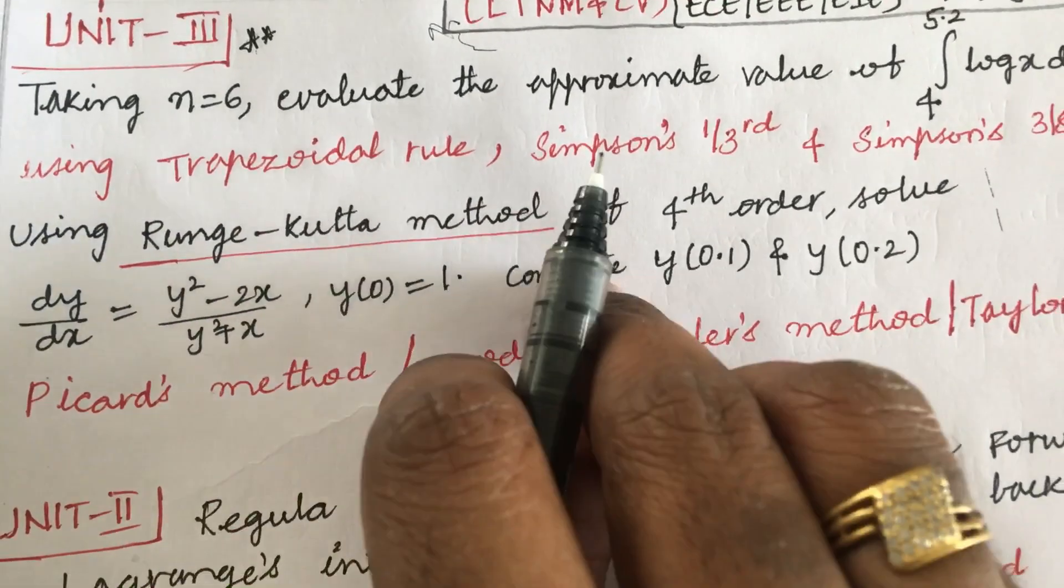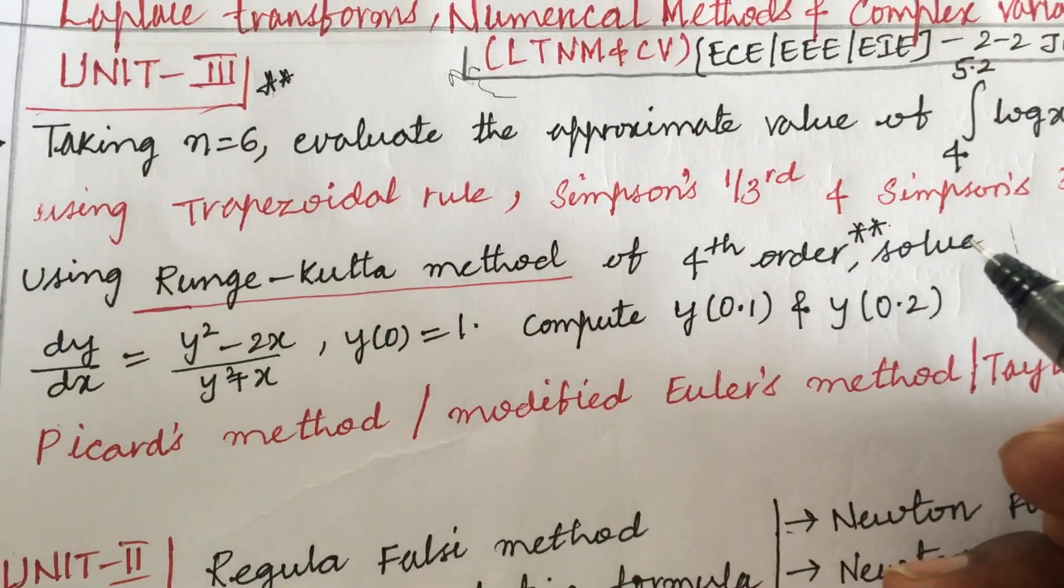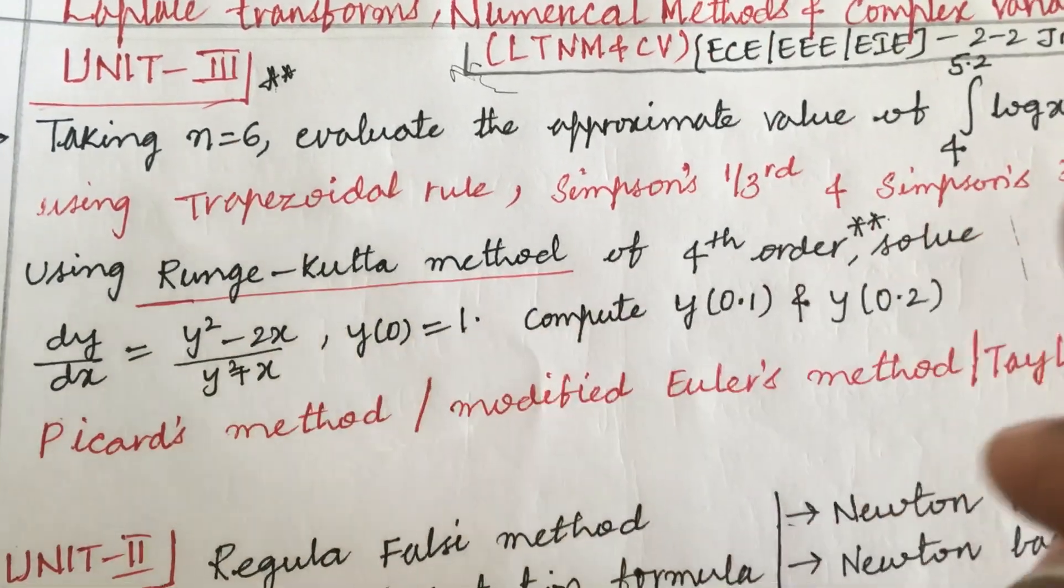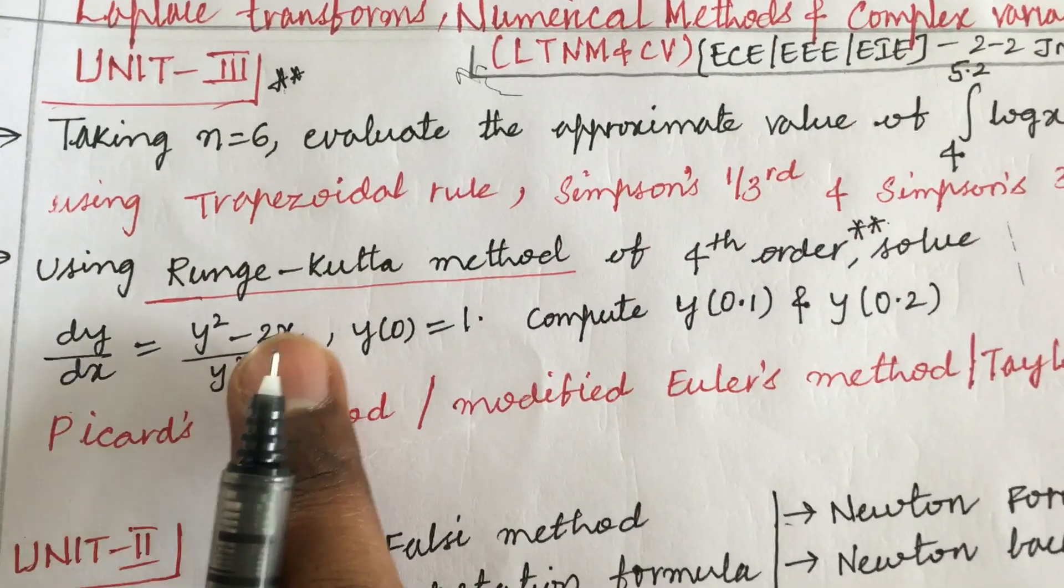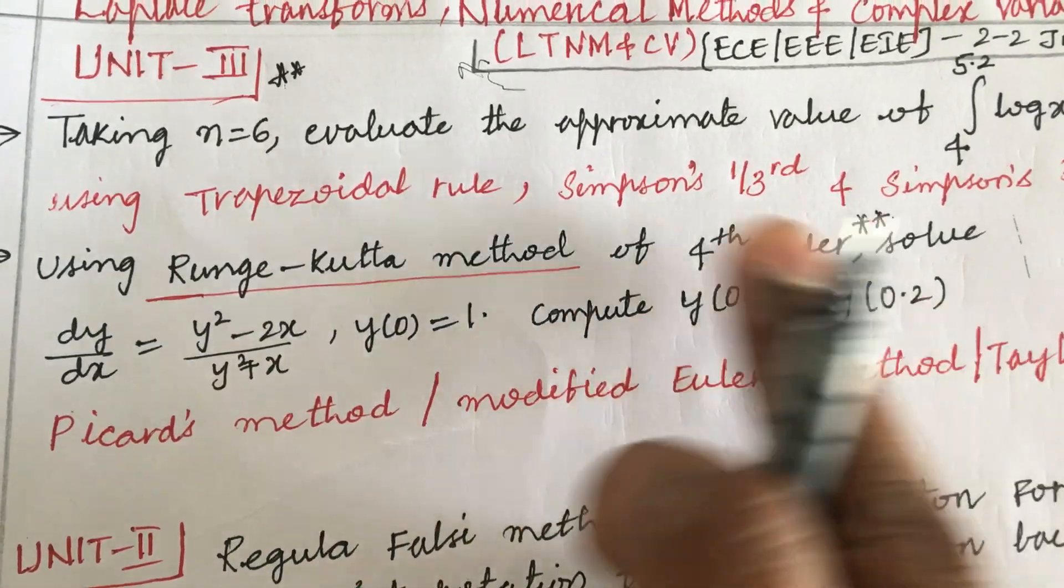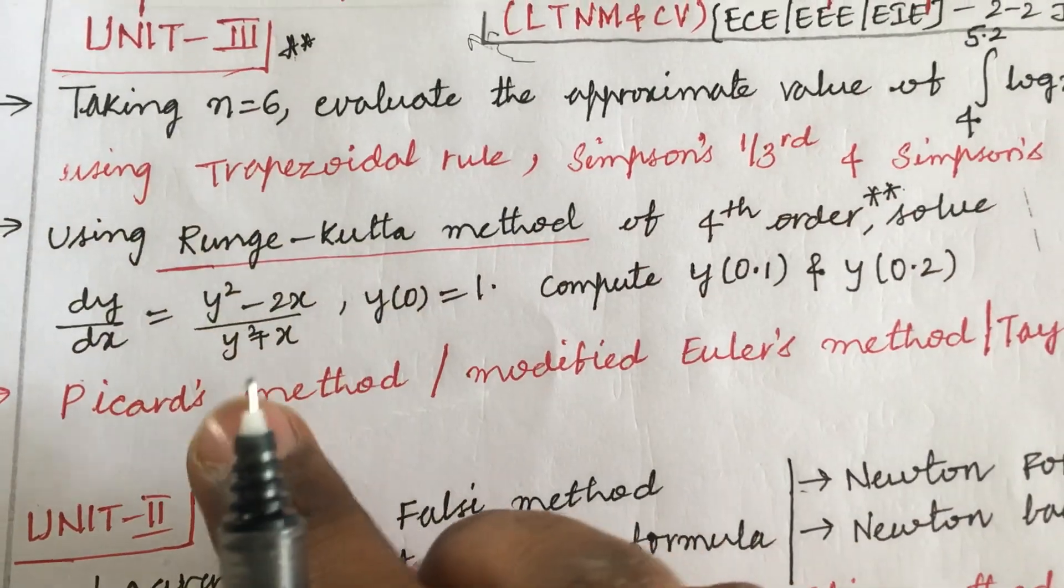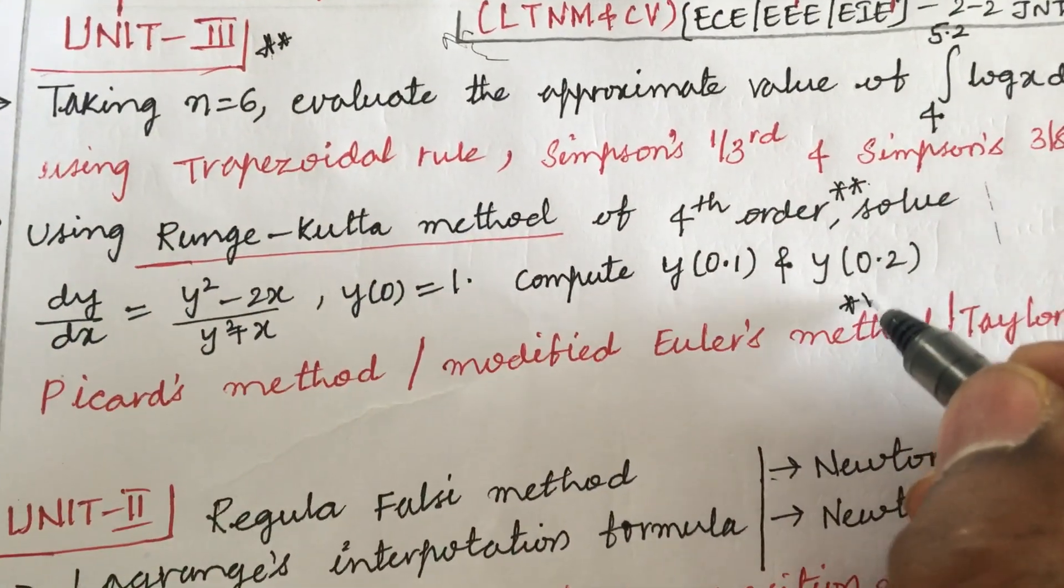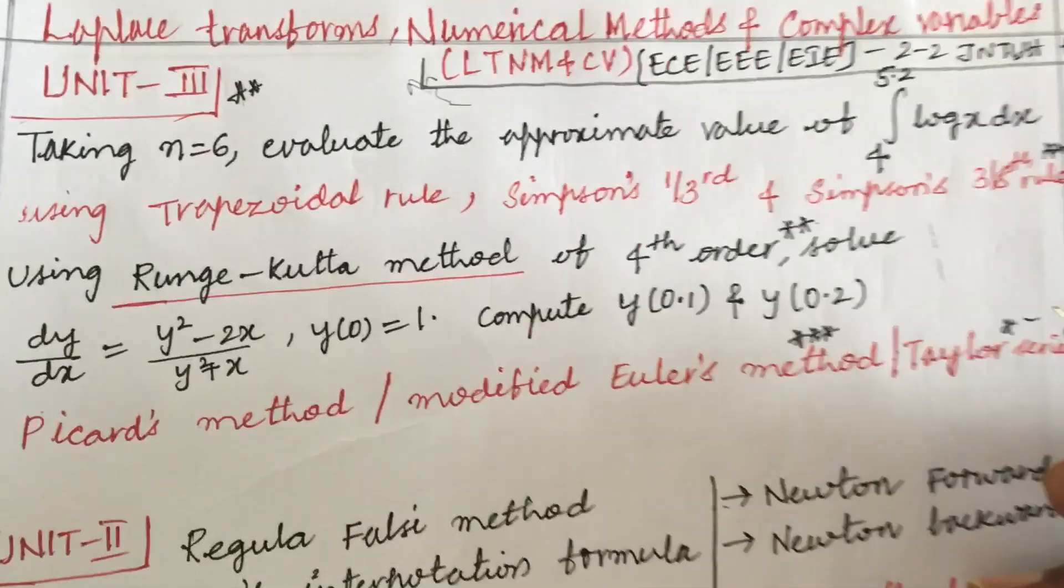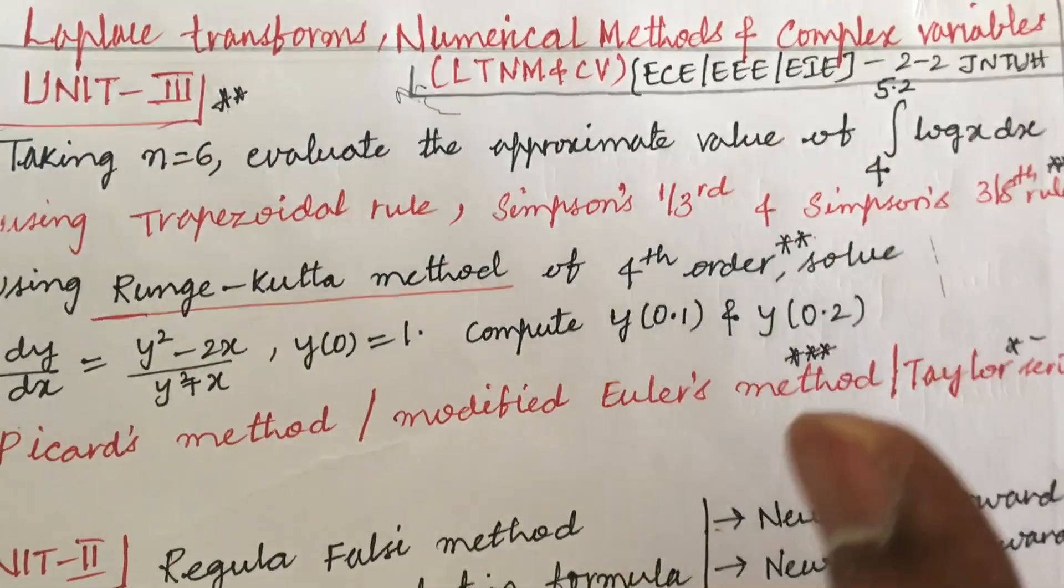Next, using Runge-Kutta method of the fourth order is also set to be the very important question. The long questions you are getting an option, so this may be the one question. By the fourth order solve this differential equation y prime equals to y squared minus 2x, y(0) equals 1, and compute at these points. Later the short question or the long question may be the Picard's method or the modified Euler's method. They may ask in the short question the Taylor series. This time there are no separate short questions, they may be asking certain definitions.